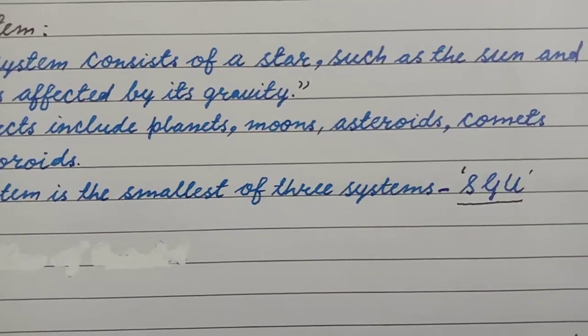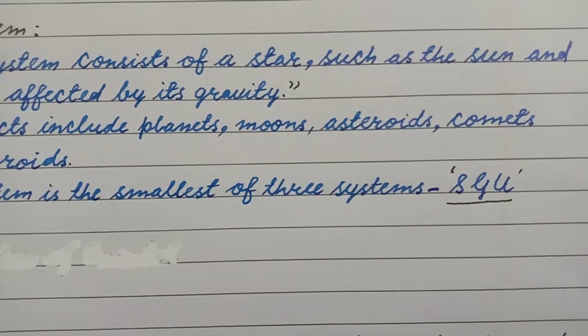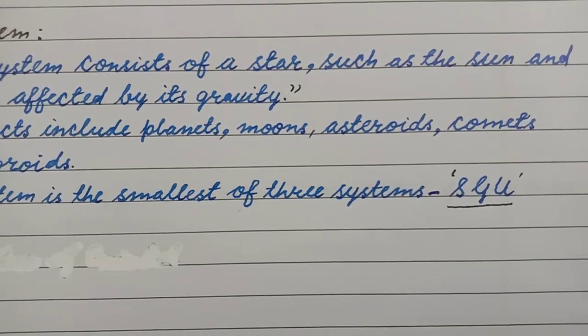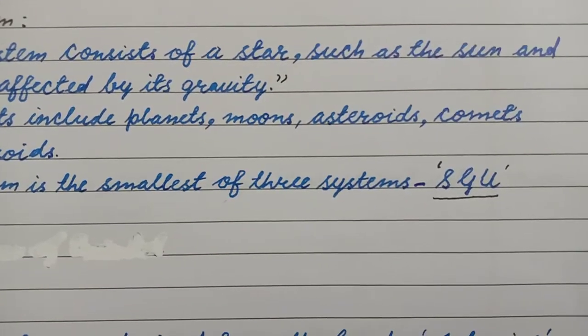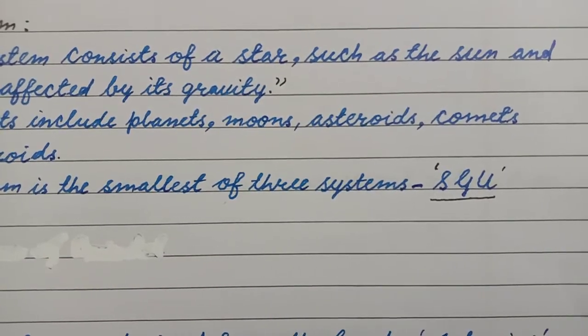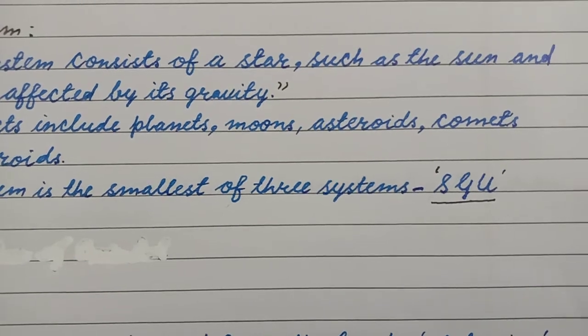In SGU: S for solar system, G for galaxy, U for universe. Solar system is the smallest of the three systems.